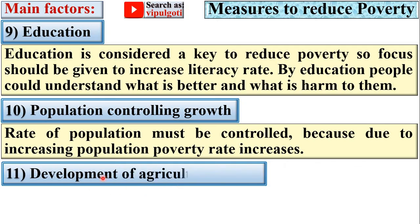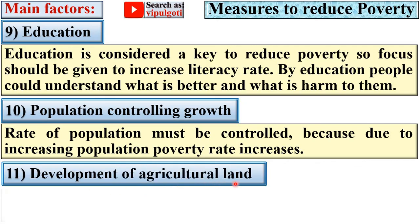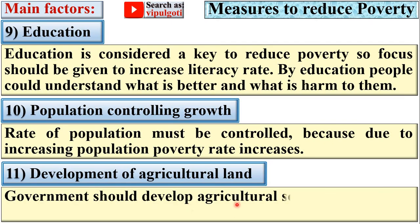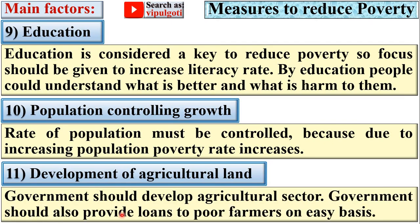Next, development of agriculture land. The government should develop the agriculture sector and also provide loans to poor farmers on an easy basis.